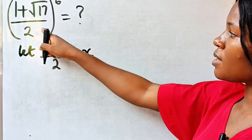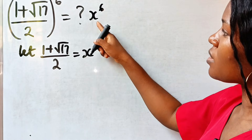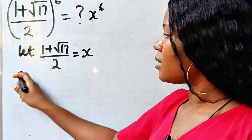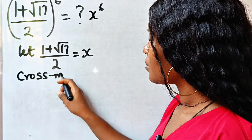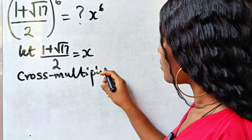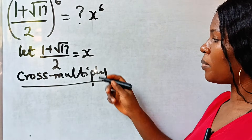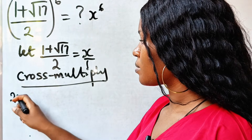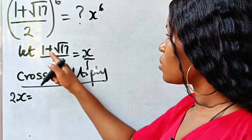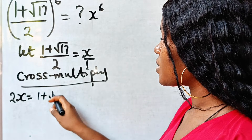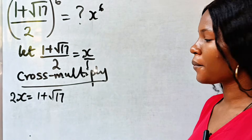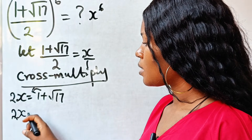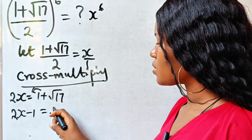This implies that we are actually looking for x to the power of 6. Now let's cross multiply. If we cross multiply, this is x over 1, so we have 2 times x which gives us 2x, and that is equal to 1 plus √17.